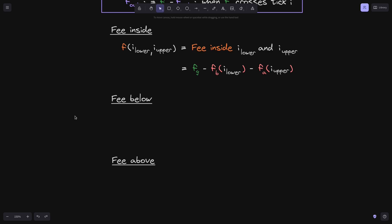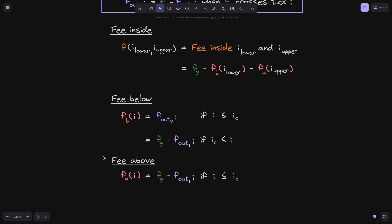Starting with phi below: f_b(i) equals f_out(i) if the current tick i_c is greater than or equal to tick i; otherwise it equals f_g minus f_out(i). Likewise for phi above: f_a(i) equals f_g minus f_out(i) if the current tick i_c is greater than or equal to tick i; otherwise it equals f_out(i).